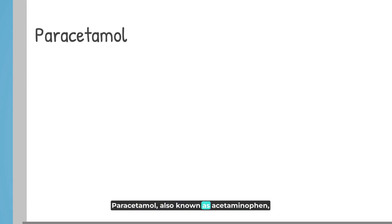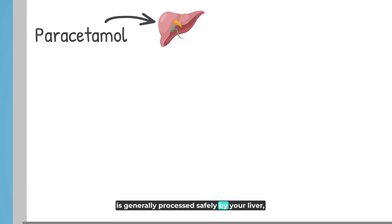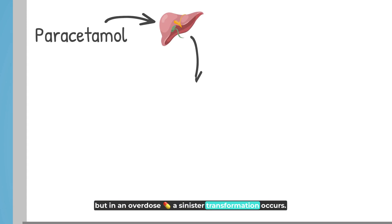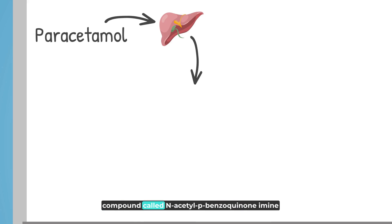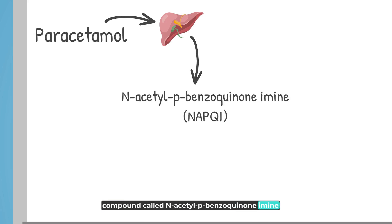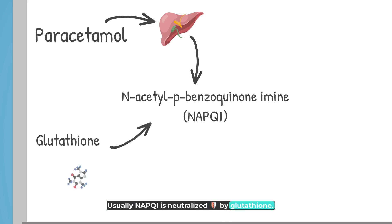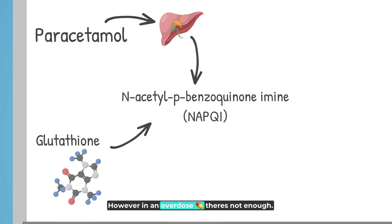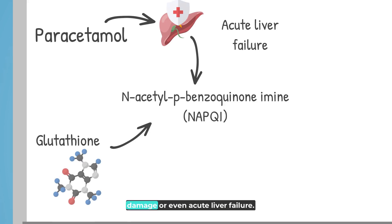Paracetamol, also known as acetaminophen, is generally processed safely by your liver. But in an overdose, a sinister transformation occurs. A tiny fraction turns into a harmful compound called N-acetyl-P-benzoquinonamine, NAPQI. Usually, NAPQI is neutralized by glutathione. However, in an overdose, there's not enough glutathione, leading to potential liver damage or even acute liver failure.